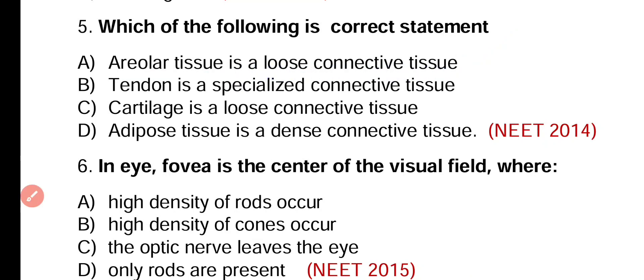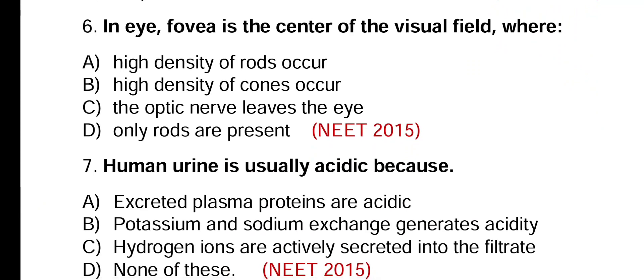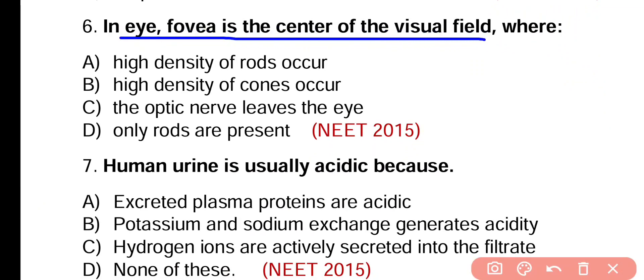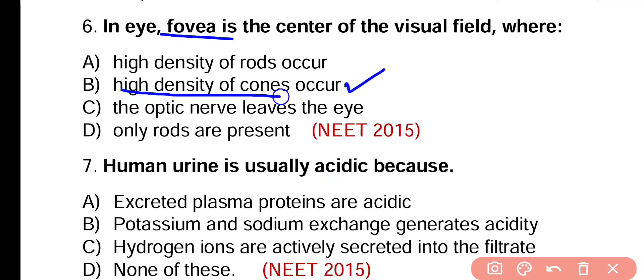Question number 6. In mammalian eye, fovea is the center of visual field where: high density of rods occur, high density of cones occur, the optic nerve leaves the eye, or only rods are present? Correct answer is option B. In fovea, high density of cones occurs while there are no rods at fovea.